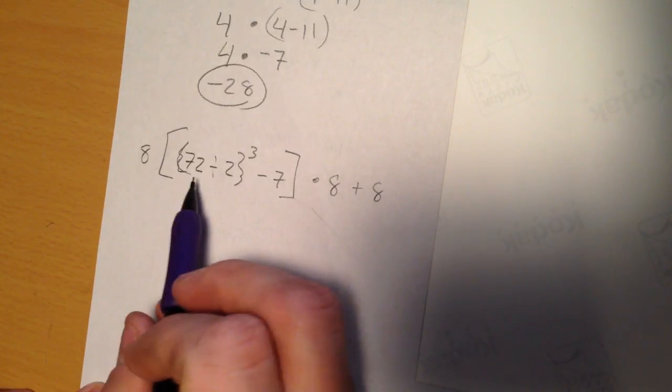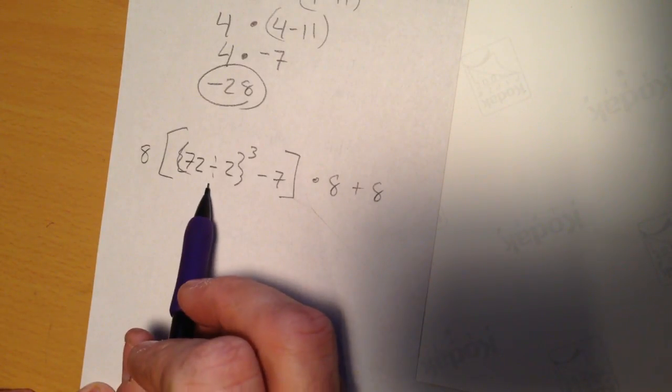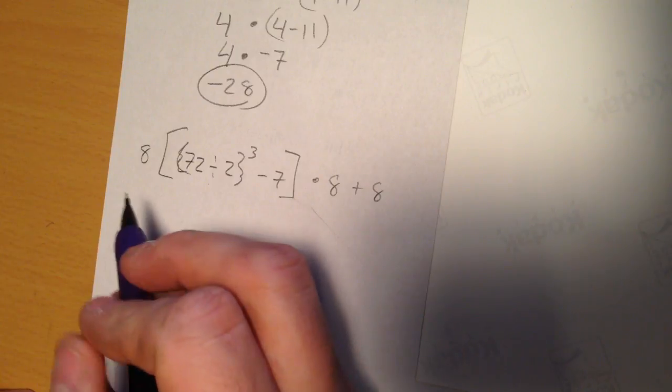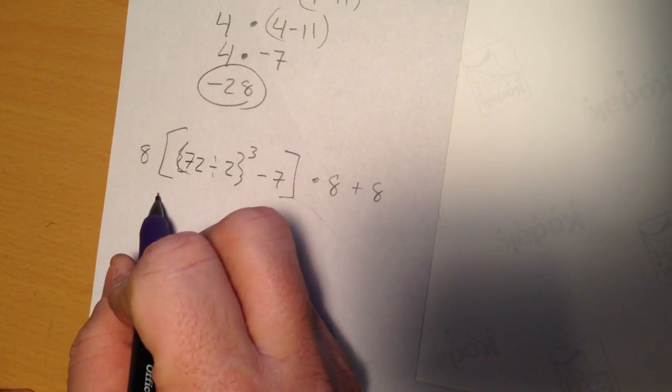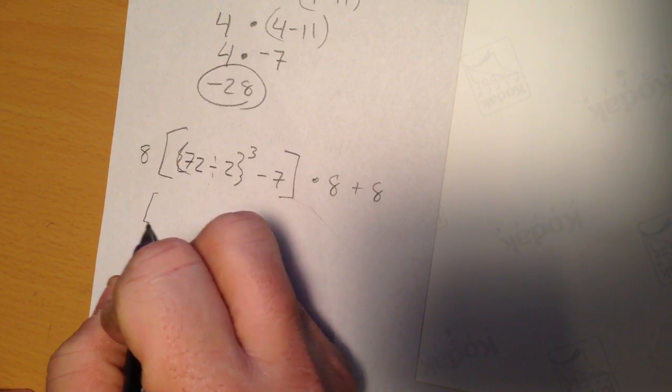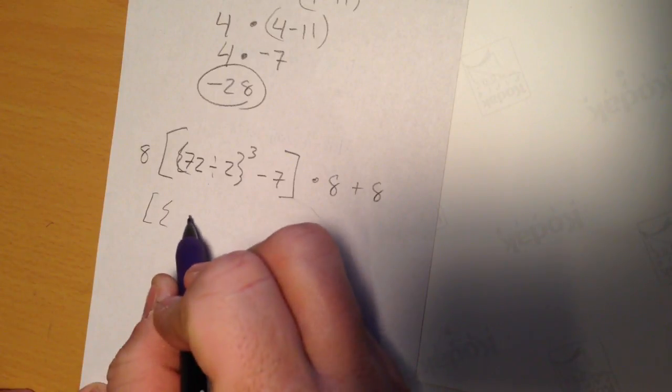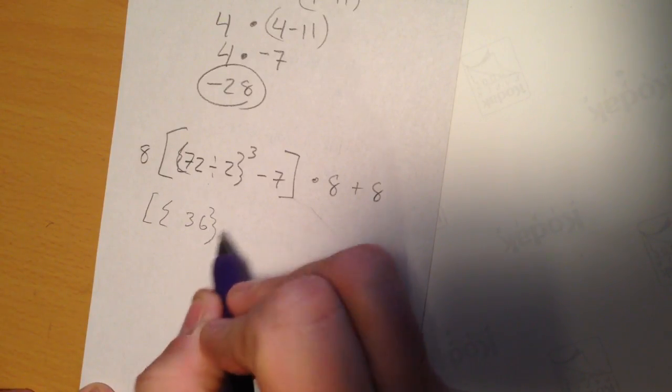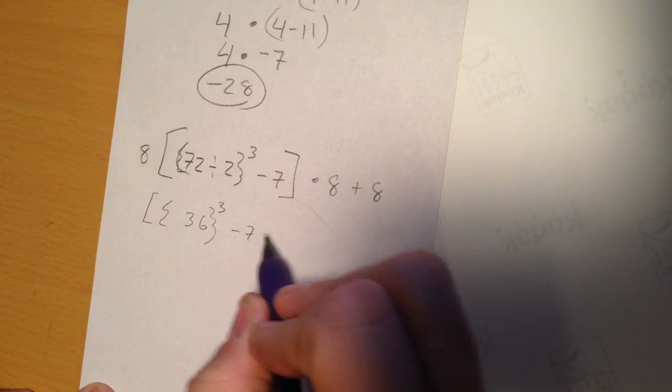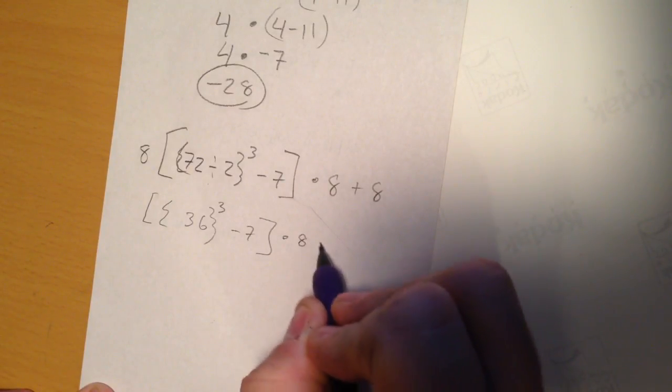So inside here, I've got to do innermost first, 72 divided by 2, which is 36. So, I'm going to keep my brackets. I have 36 to the third power, minus 7, times 8 plus 8.